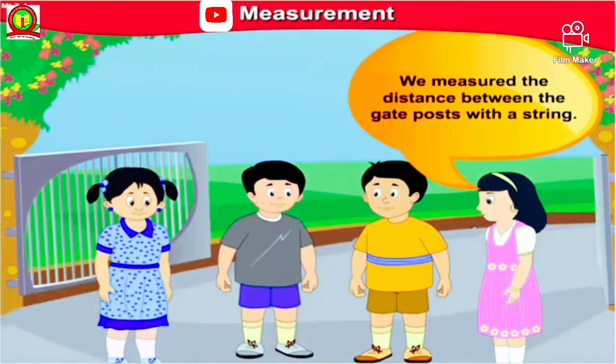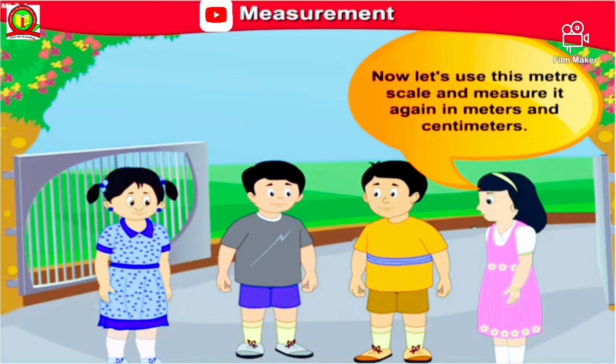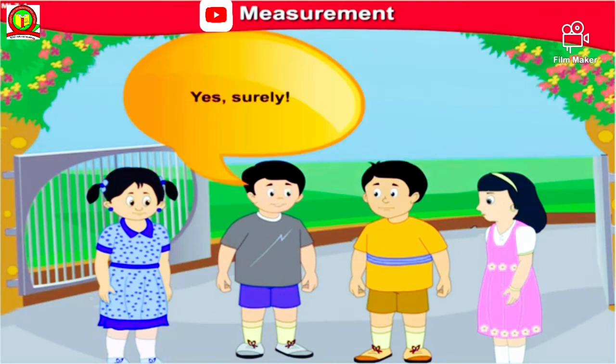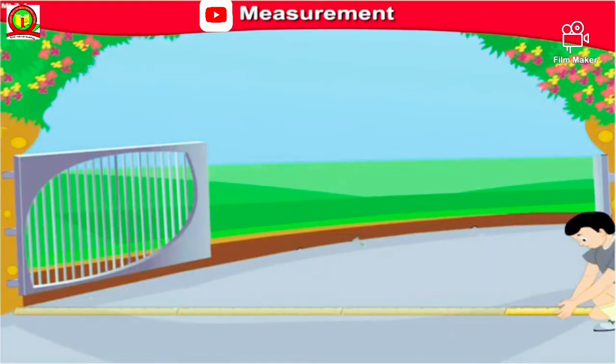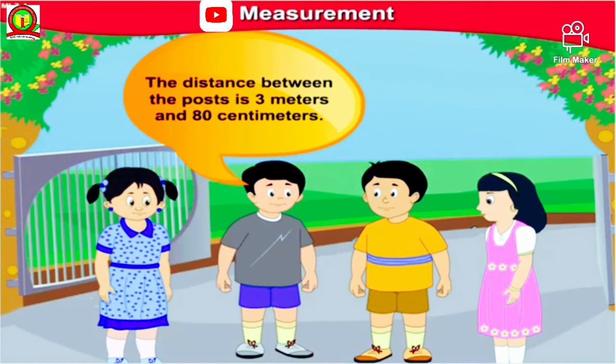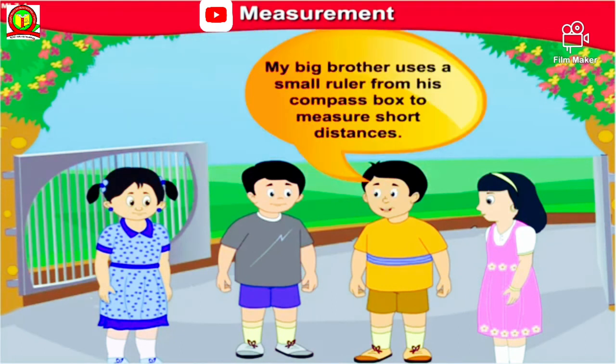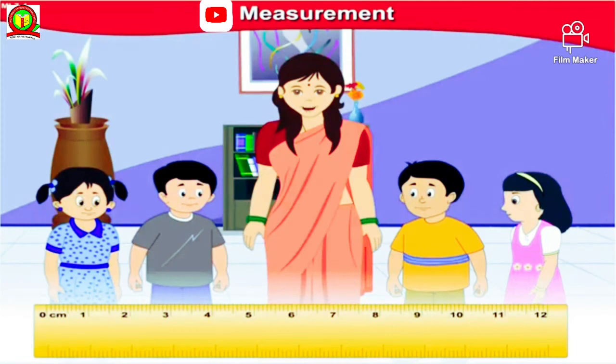We measured the distance between the gate post with a string. Now let's use this meter scale and measure it again in meters and centimeters. Yes, surely. This distance between the post is 3 meters and 80 centimeters. My big brother uses a small ruler from his compass box to measure short distances.